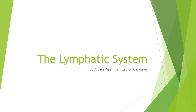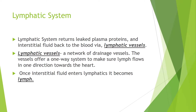The lymphatic system returns leaked plasma proteins and interstitial fluid back to the blood via the lymphatic vessels. The lymphatic vessels are a network of drainage vessels that offer a one-way system to make sure lymph flows in one direction towards the heart. Once interstitial fluid enters lymphatics, it then becomes lymph.